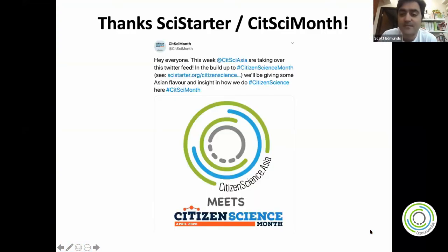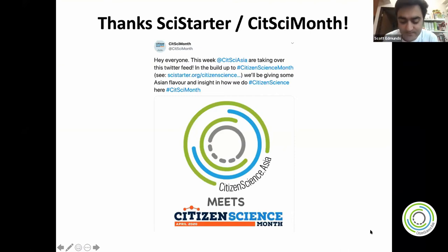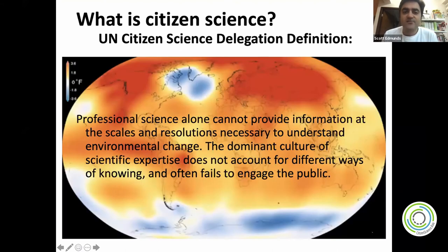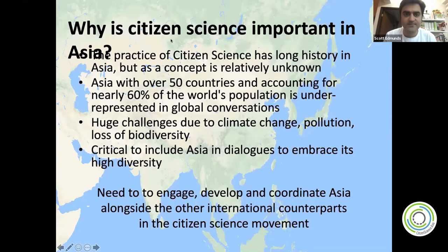Caroline has done a great introduction on what citizen science is, so we can focus on giving some context on Asia, the organization in Asia, and talk a bit about biodiversity — because today is about Asian biodiversity. Why is citizen science important in Asia? We have a long, long history here. Cherry blossom counts in Japan have gone back over a thousand years, and citizens have collected data on swarms of locusts for thousands of years in China. It's not a new concept here.